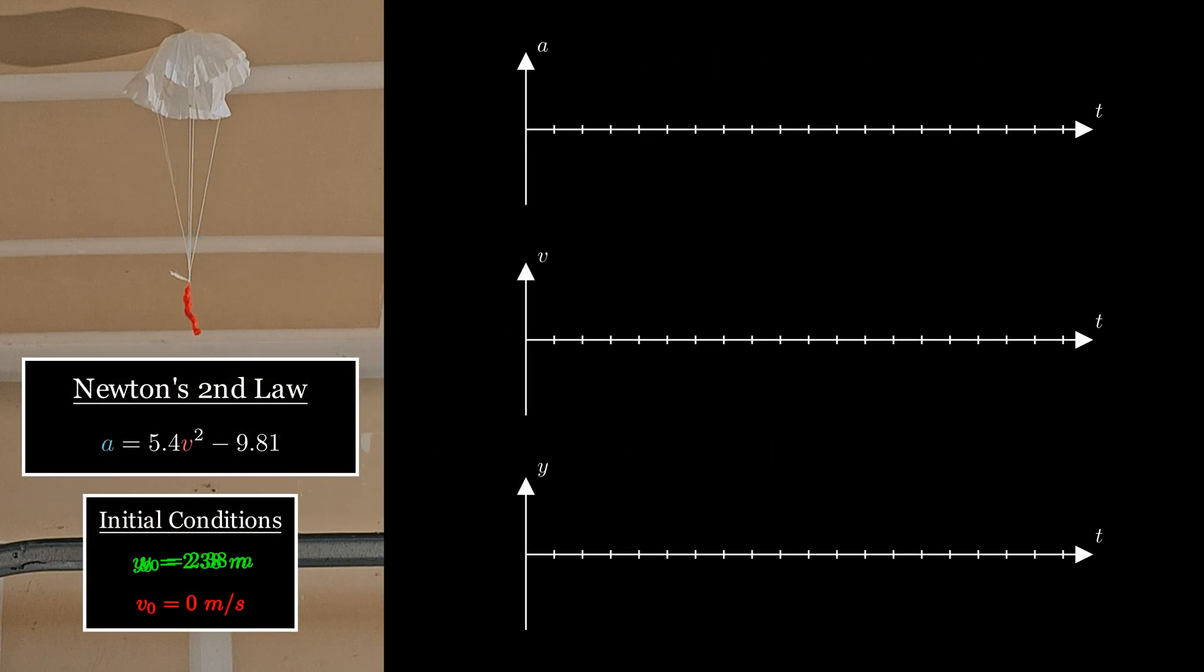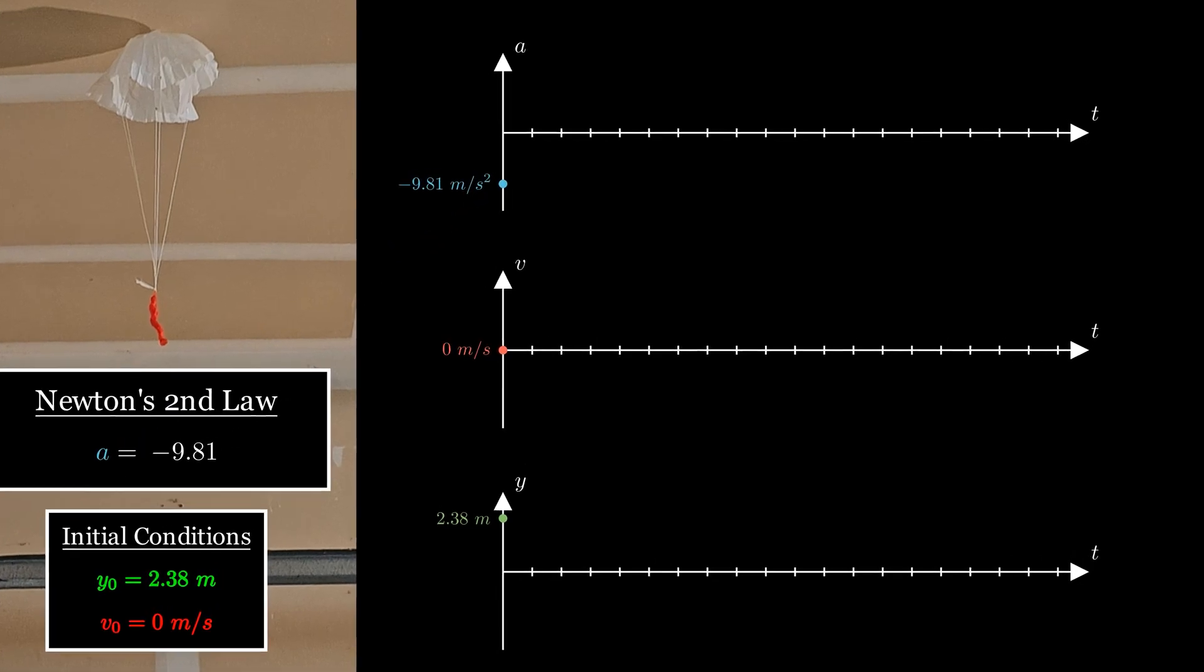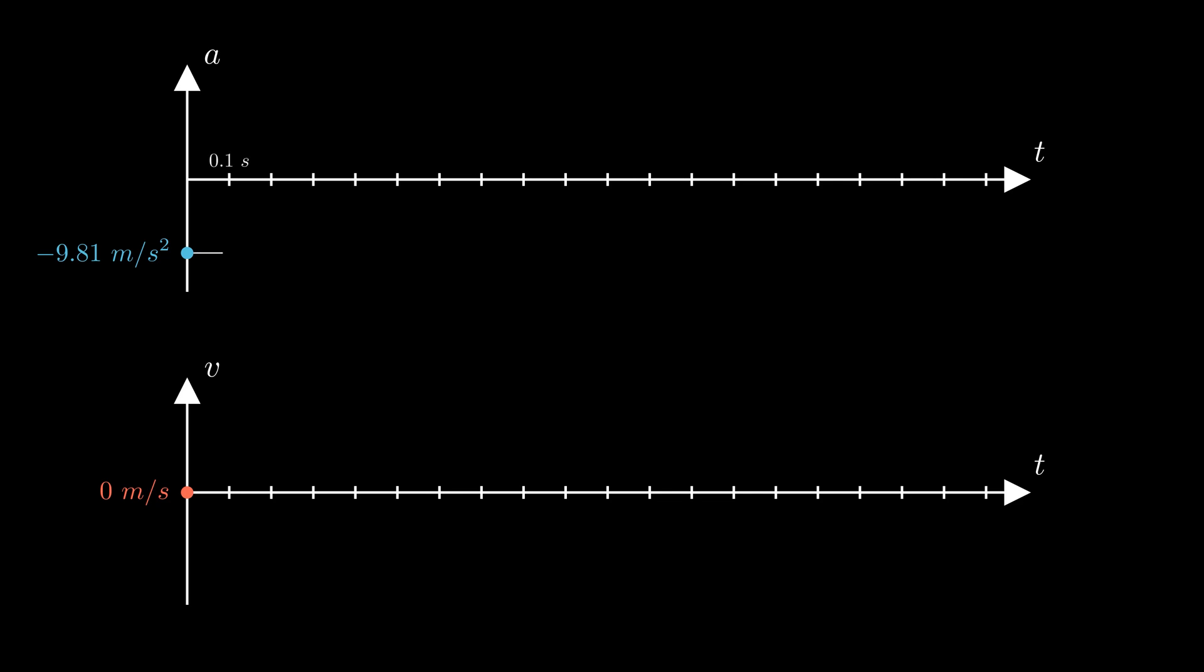We do know from measuring that the initial height is 2.38 meters and that the initial velocity is zero. So at this instance where the parachute man has just been released and isn't moving yet, you can plug in the velocity to see that there would be no influence of drag and the acceleration of the parachute man is just due to gravity. Next, we'll assume this will be his acceleration for a short period of time, let's say 0.1 seconds.